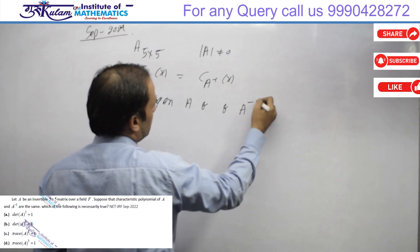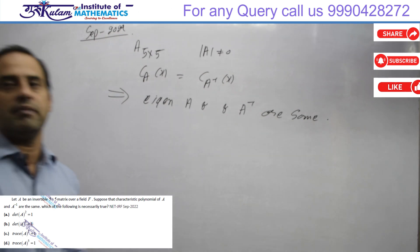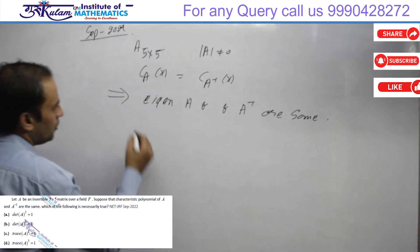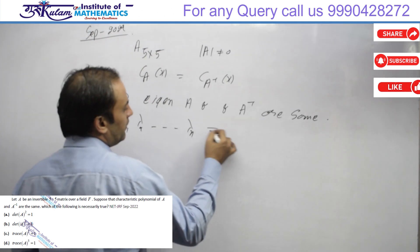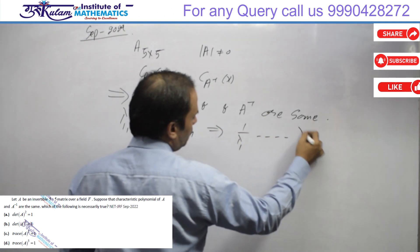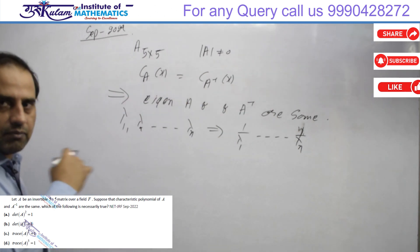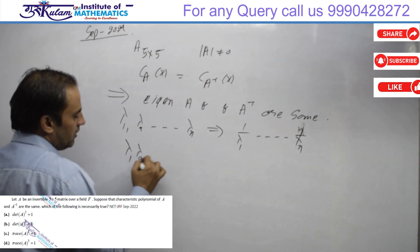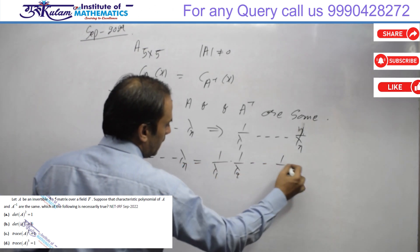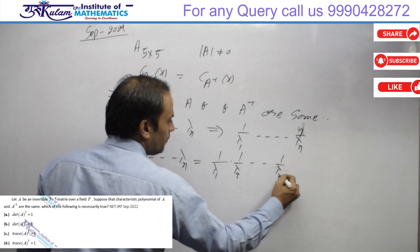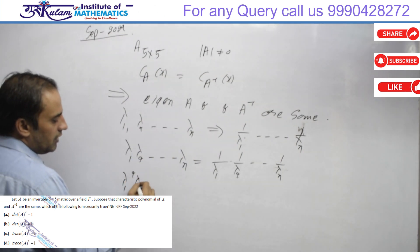Since the characteristic polynomials are the same, the eigenvalues and their algebraic/geometric multiplicities are the same. If the eigenvalues of A are λ₁, λ₂, ..., λₙ, then the eigenvalues of A inverse are 1/λ₁, 1/λ₂, ..., 1/λₙ. But these must be the same set, so the product must also be the same. Therefore λ₁·λ₂·...·λₙ must equal 1/λ₁ · 1/λ₂ · ... · 1/λₙ, meaning each λᵢ corresponds to some 1/λₖ.